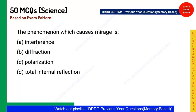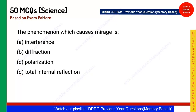Next question: What phenomenon causes a mirage? A mirage is the feeling that there is water nearby when there isn't. It happens due to total internal reflection, where light passing from a denser medium to a rarer medium gets reflected. This phenomenon causes the mirage effect.